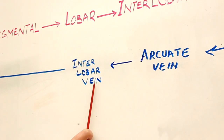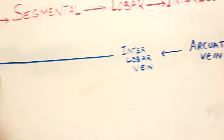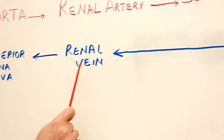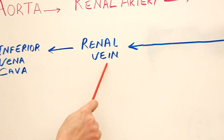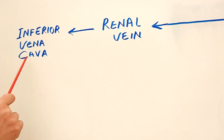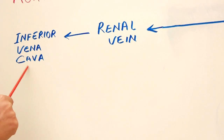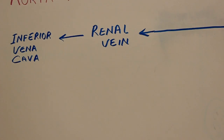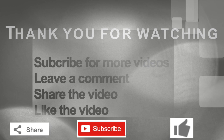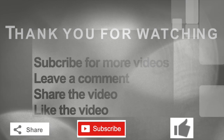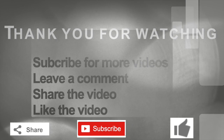The interlobar veins join each other to eventually form the renal vein, which exits the kidney and drains blood into the inferior vena cava.